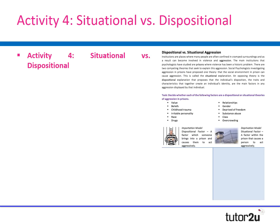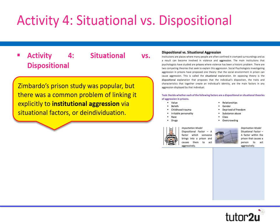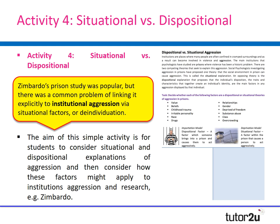Activity four is a simple situational versus dispositional activity. Since examiner commentary highlighted that students overuse Zimbardo without discussing the importation model (dispositional) or the deprivation model (situational), students are provided with a list of bullet points and must assign each to either dispositional or situational. They then consider how each might apply to Zimbardo's research, applying theory to research rather than just describing the study.